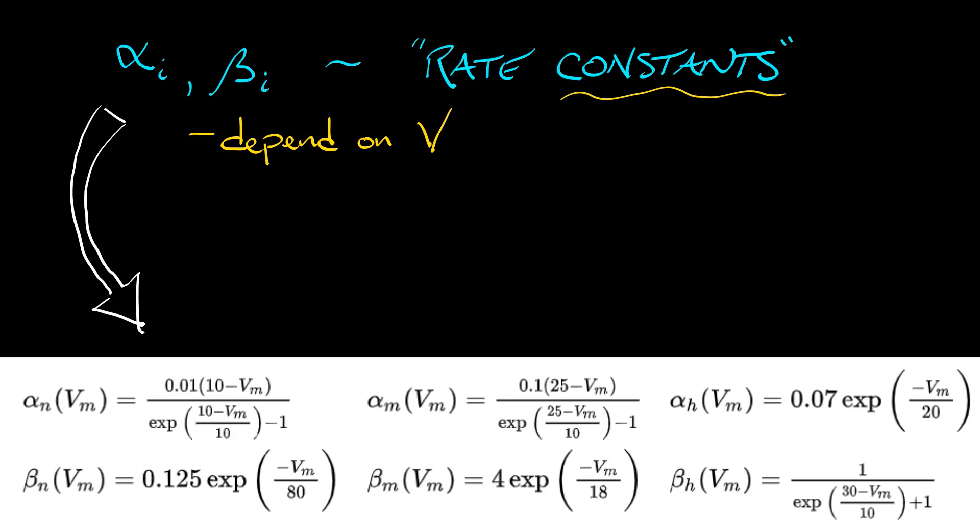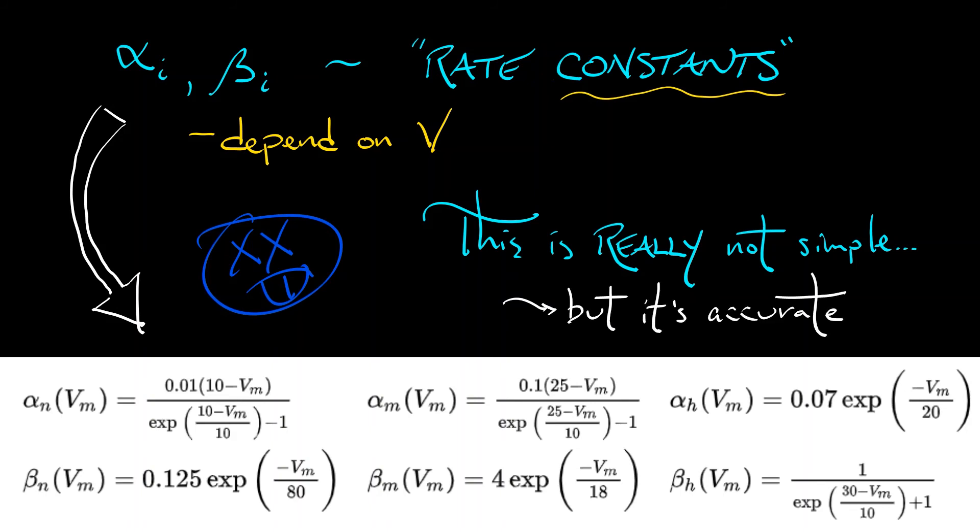And this is just the beginning. There are generalized versions of Hodgkin-Huxley, which, ay-ay-ay, this is really not a simple model. But it is an accurate model. And that's what Hodgkin and Huxley were going for, was do a whole bunch of experiments and come up with a model that really represents what's happening.